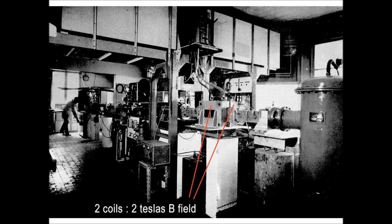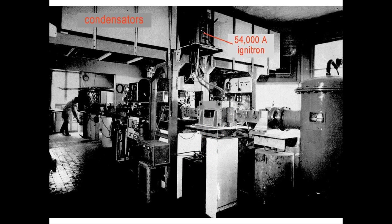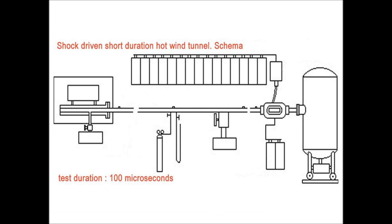The arrow shows the two coils giving a two Tesla magnetic field, given by the discharge of capacitors. And the intensity was switched by ignition connecting the 54,000 amperes current.